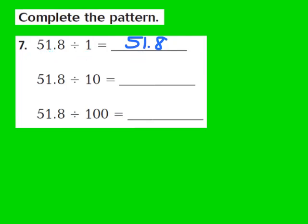Now take a look at the second part in our pattern. We have 51 and 8 tenths being divided by 10. In a 10, there is one zero. So I'm going to move my decimal point one place to the left, so that it now falls in between the 5 and the 1. Our answer now turns out to be 5 and 18 hundredths.